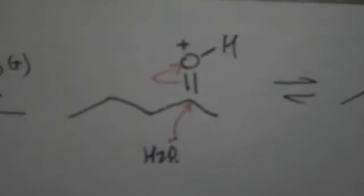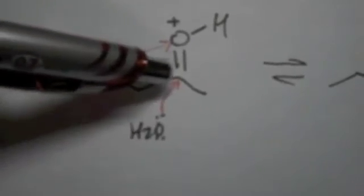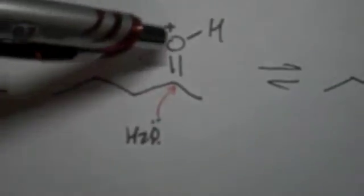To get rid of the positive, we take the water that's in the system and we attack the carbonyl, which would have the double bond leave to the oxygen to give us an alcohol group. But now since the water is attached to the carbon where the carbonyl used to be at, it's positive now.